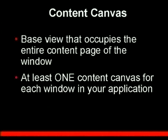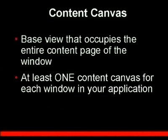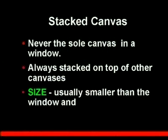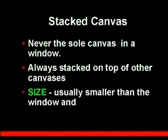The content canvas is the base view which occupies the entire content page of the window. At least one content canvas must exist for every window in your application. Stacked canvases are the secondary canvases which you pile on top — a stacked canvas is never the sole canvas on a window, it's always stacked on top of other canvases, and its size is always smaller than the window.